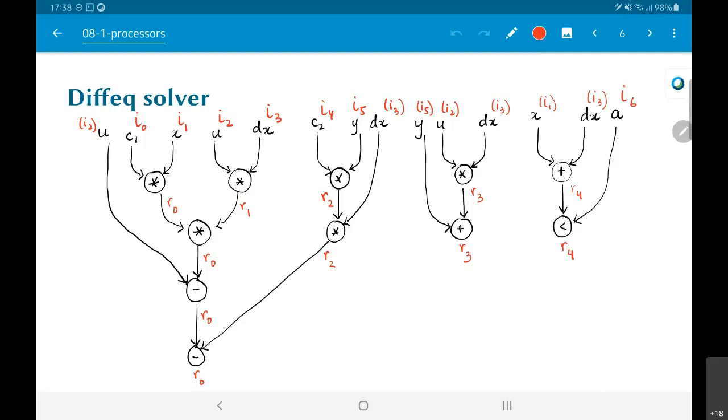It is hopefully intuitively obvious to all of you why it does not matter. Because anyway, I have just used R0, I am not going to have that old value. I don't need that old value again anywhere else, which is why I am reusing R0 at the output of the multiplier as well.